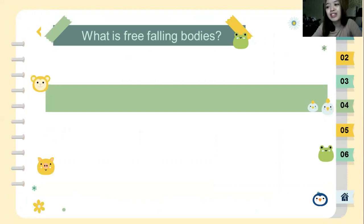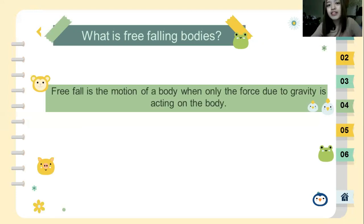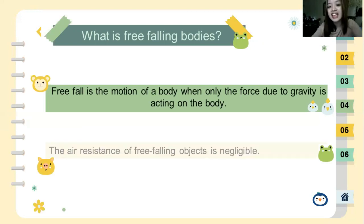Free fall is a common kind of motion which everybody can observe in daily life. If we drop something accidentally we can see its motion. Subsequently, all objects free fall at the same rate of acceleration regardless of their mass. So free fall is the motion of a body when only the force due to gravity is acting on the body and the air resistance of free falling object is negligible.